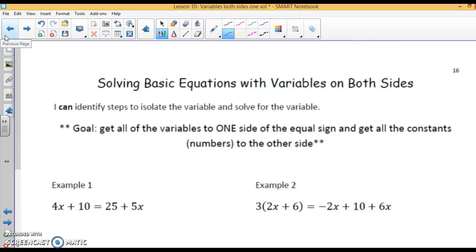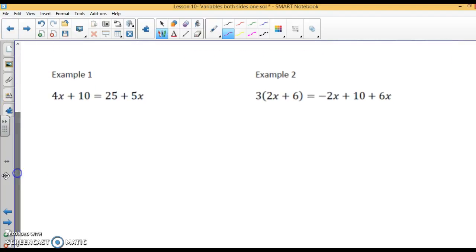You should be on page 16 in your note packet. We are going to solve equations today with variables on both sides. This is the first time we've seen equations like this. We are going to follow all the steps that we did in other equations. Look at the first one: 4x plus 10 equals 25 plus 5x. Our first step in solving equations is to simplify both sides. These are simplified. Then you need to look at this and say there is a variable on both sides. I recommend that after you simplify both sides, you get all the variables together.